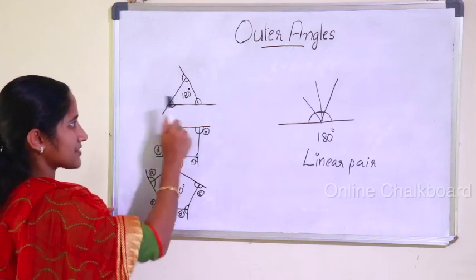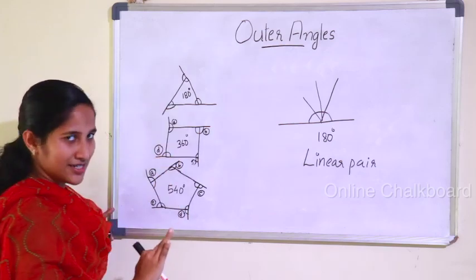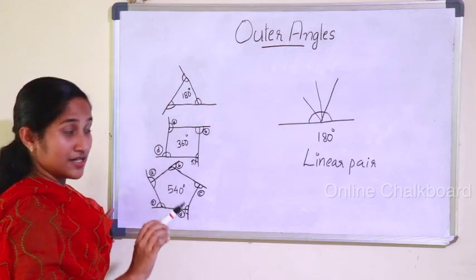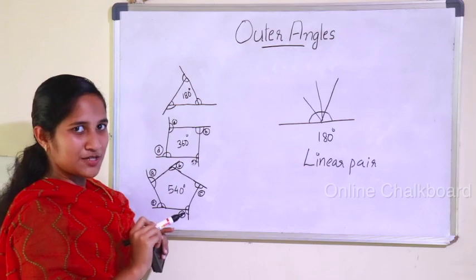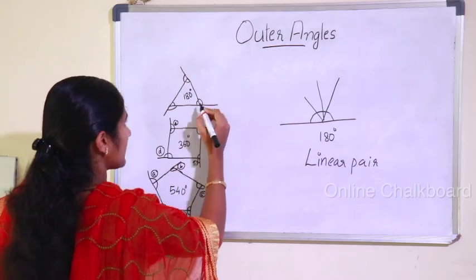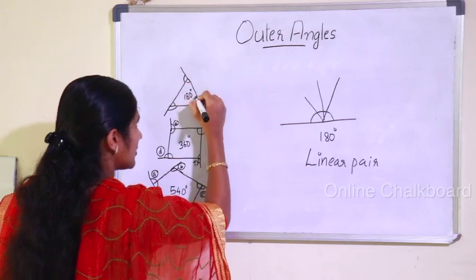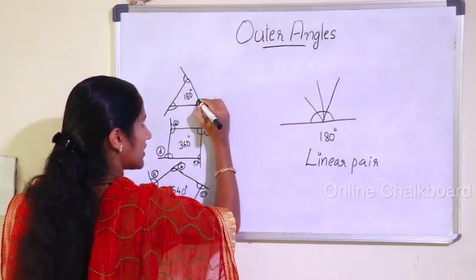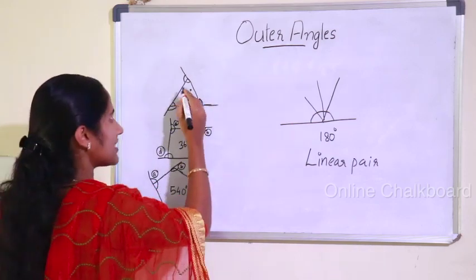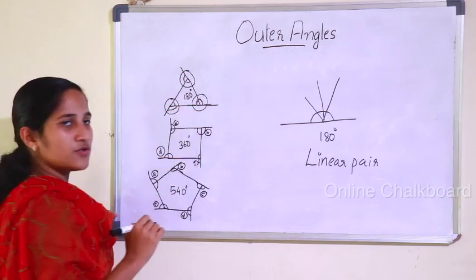Now we consider this triangle. A triangle has three sides with three interior and three exterior angles. The sum of the interior angles is 180 degrees. Now, a triangle has one linear pair at each vertex. How many linear pairs are in a triangle? One, two, three — there are three linear pairs.